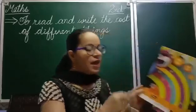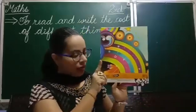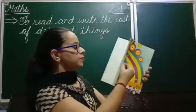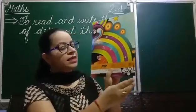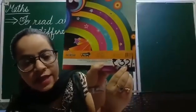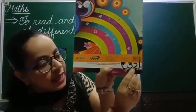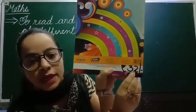Now see, I have a scrapbook. Look, see its rate, its value, its price. What's its rate? See here, is it visible to all? What's its rate? 32.